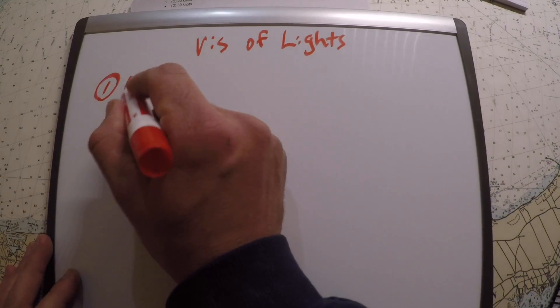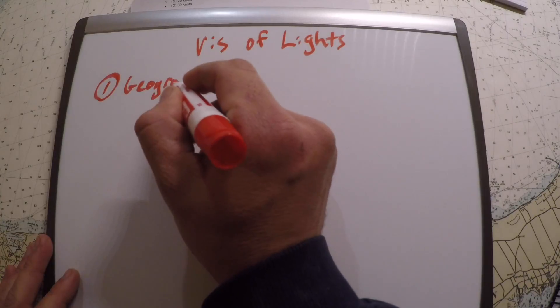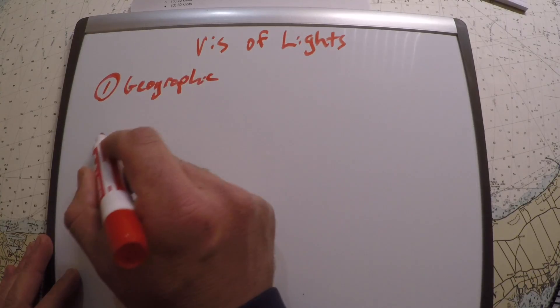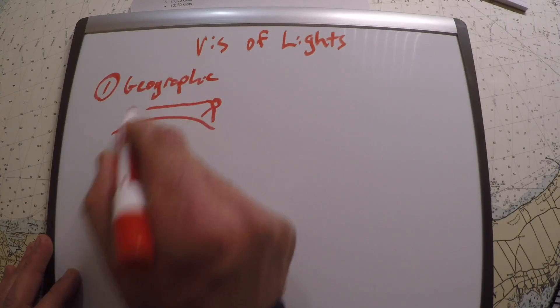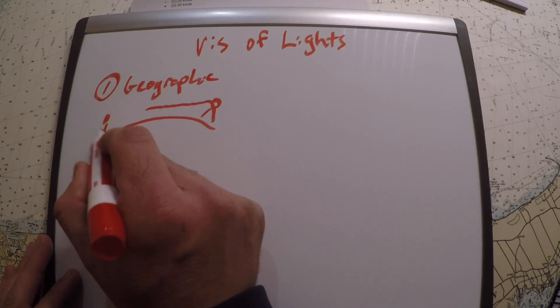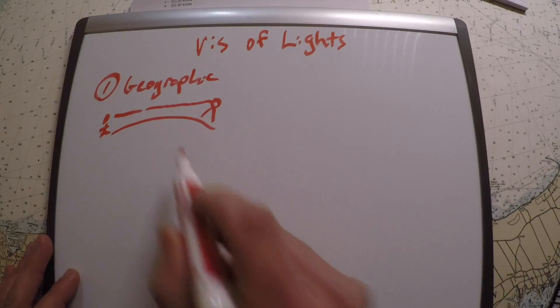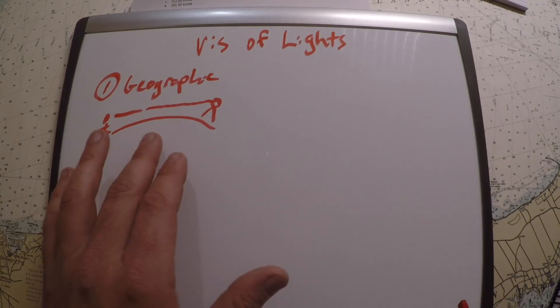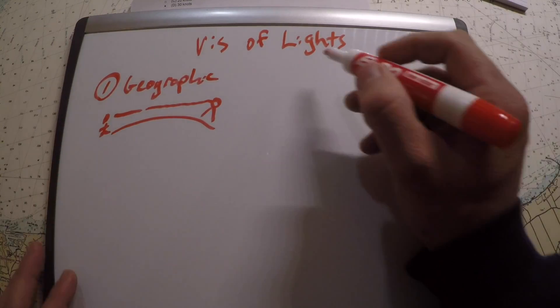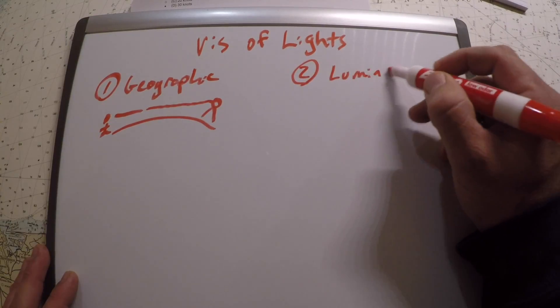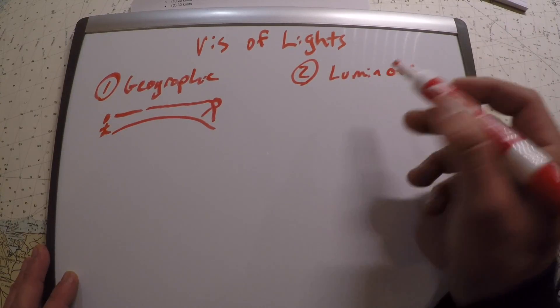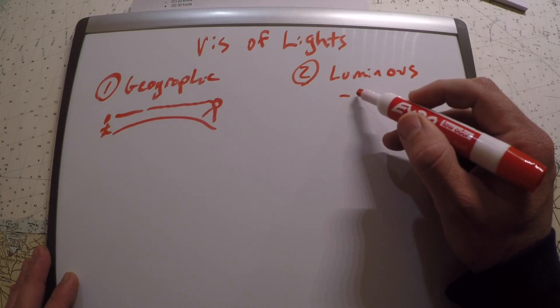There's two things you need to do. One is determine the geographic range, which is how far you could see a lighthouse based on the distance to the horizon. If you're way over here, your height and its height is the theoretical maximum distance you could see in perfect visibility.